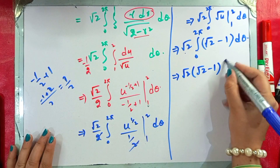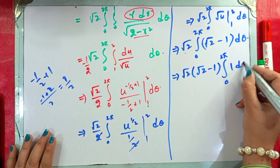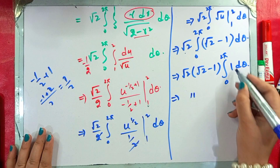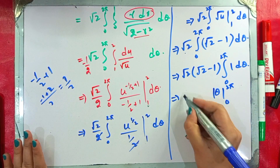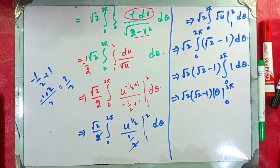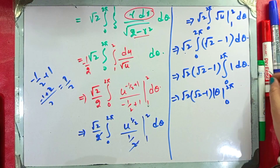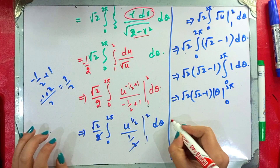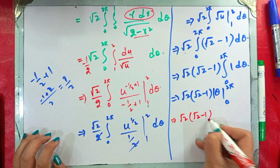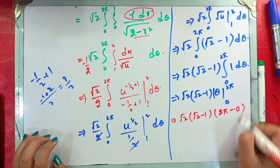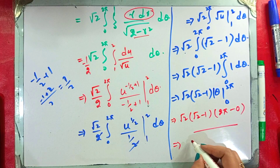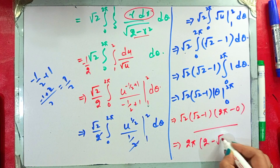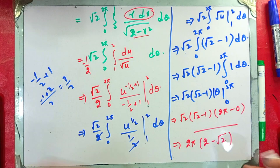After applying the limits θ from 0 to 2π — substituting gives 2π − 0 = 2π. Multiplying everything together: √2 · (√2 − 1) · 2π = 2π(2 − √2). So the final answer for the surface area is 2π(2 − √2). This is the surface area. I hope that everyone will understand.